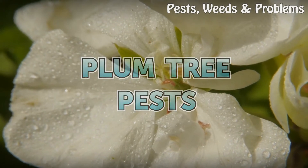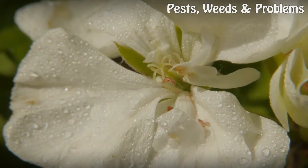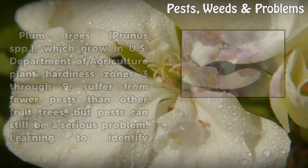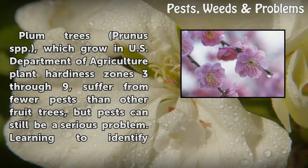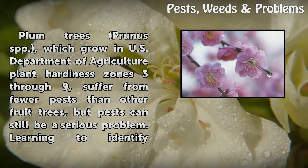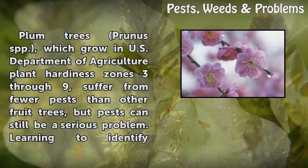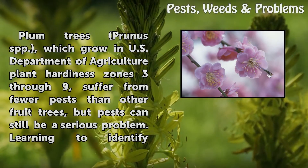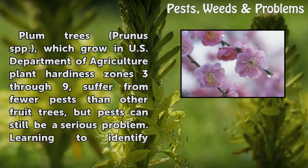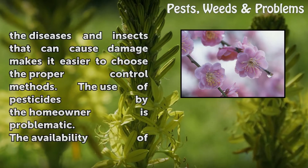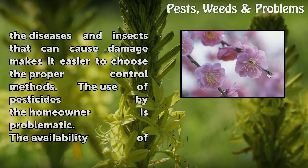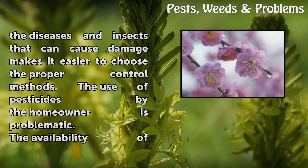Plum Tree Pests. Plum trees (Prunus spp.), which grow in U.S. Department of Agriculture Plant Hardiness Zones 3 through 9, suffer from fewer pests than other fruit trees, but pests can still be a serious problem. Learning to identify the diseases and insects that could cause damage makes it easier to choose the proper control methods.